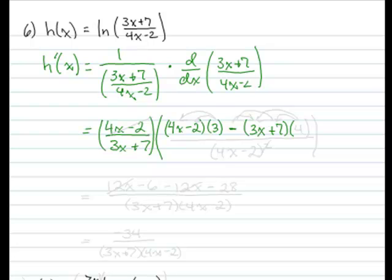now 3x plus 7, times the derivative of the denominator, which is just 4. All over the denominator squared. Squared. So we're going to have some canceling we can do. We can cancel one of these 4x minus 2s out with this one. And we're going to simplify what's in the parentheses now.